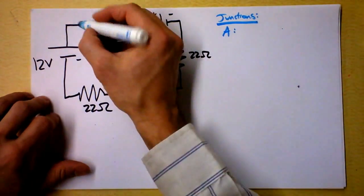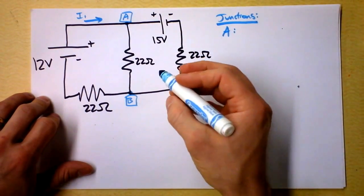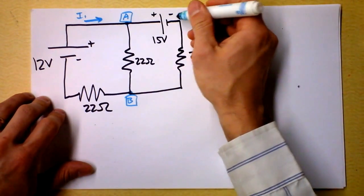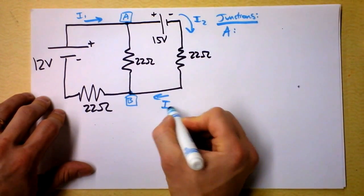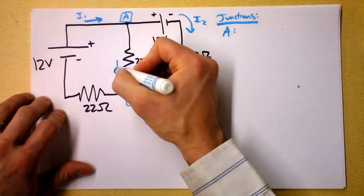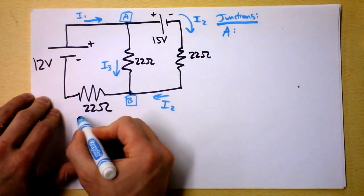So I'm going to say this is current 1 going that direction and then I'm going to call this through here current 2 going that direction so current 2 is here as well. And then this guy, this is a separate current so I'm going to call that current 3.